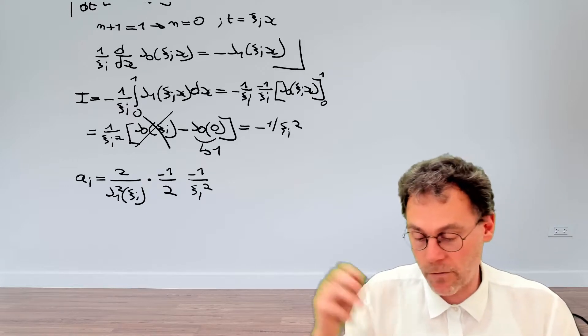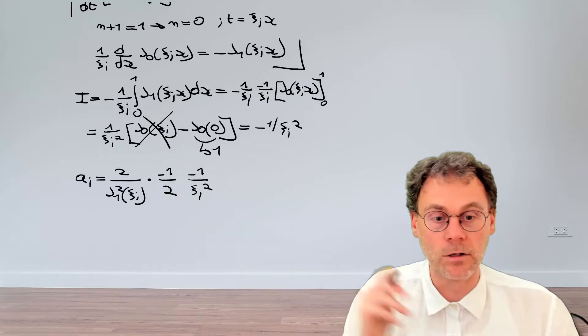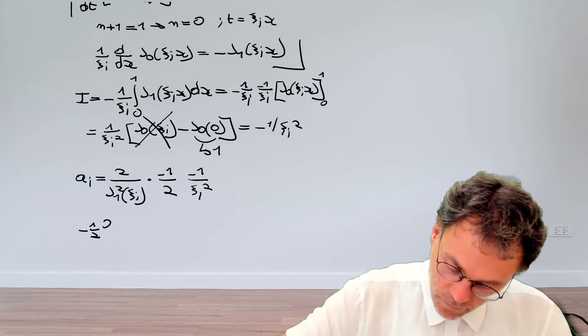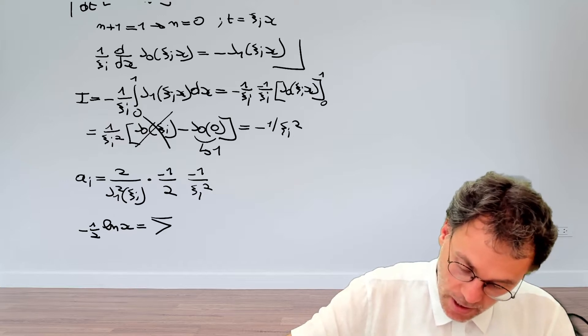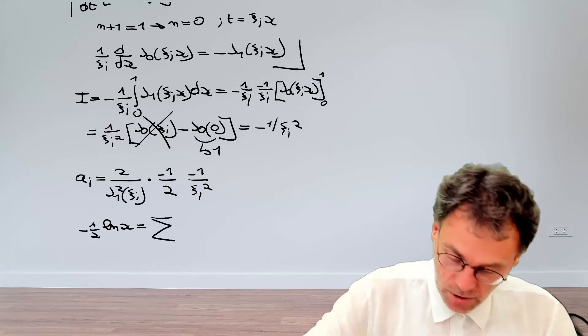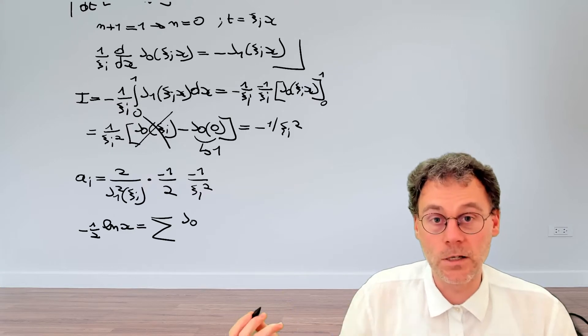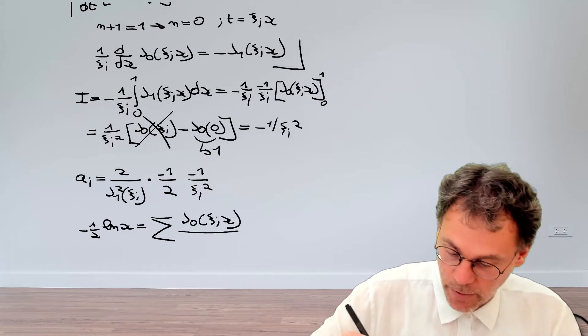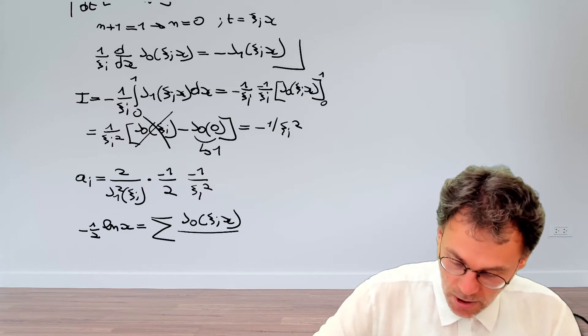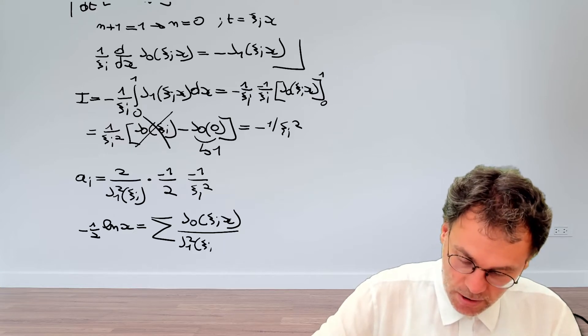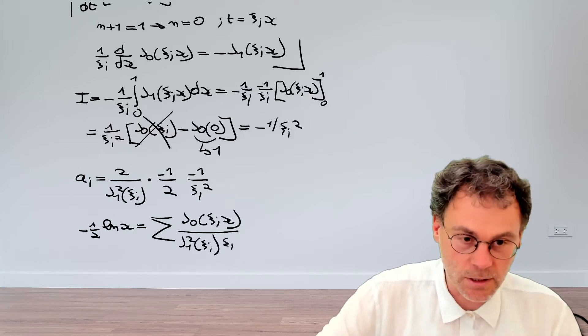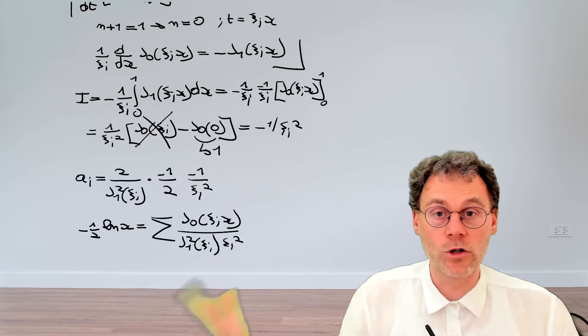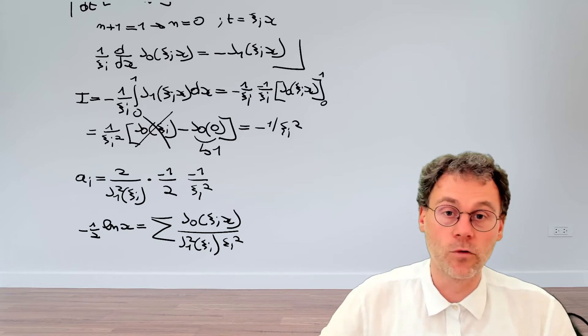And then we have our overlap integral which we calculated to be minus 1 over psi i squared. And here you see that this minus 1 half cancels with the minus over here and the 2 over there. So finally, we can write down that our minus 1 half logarithm of x can be written as the following series expansion, as a series expansion involving basis functions j0 of x ii of x and then our expansion coefficient that's just going to be j1 squared x ii divided by x ii squared. And there you have it. That's the result of this calculation where we've shown how to expand the logarithm in a Fourier Bessel series.